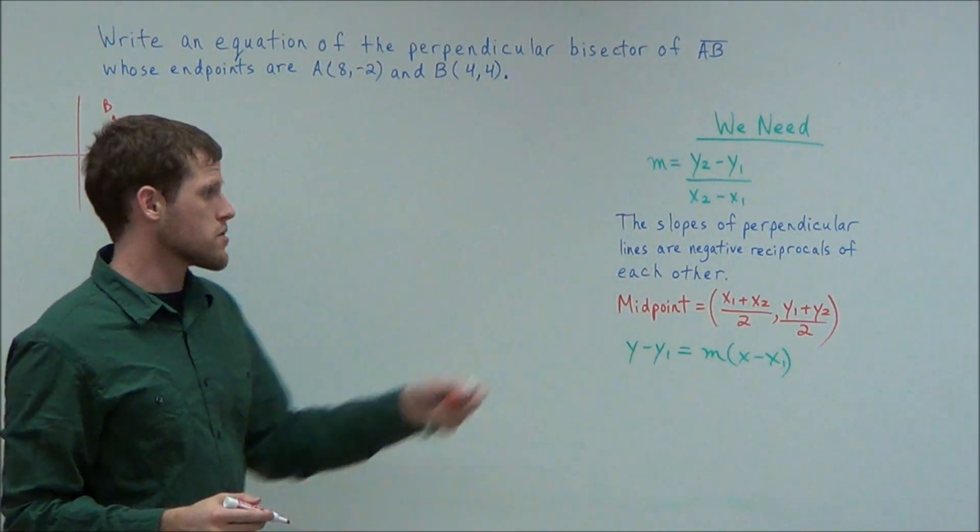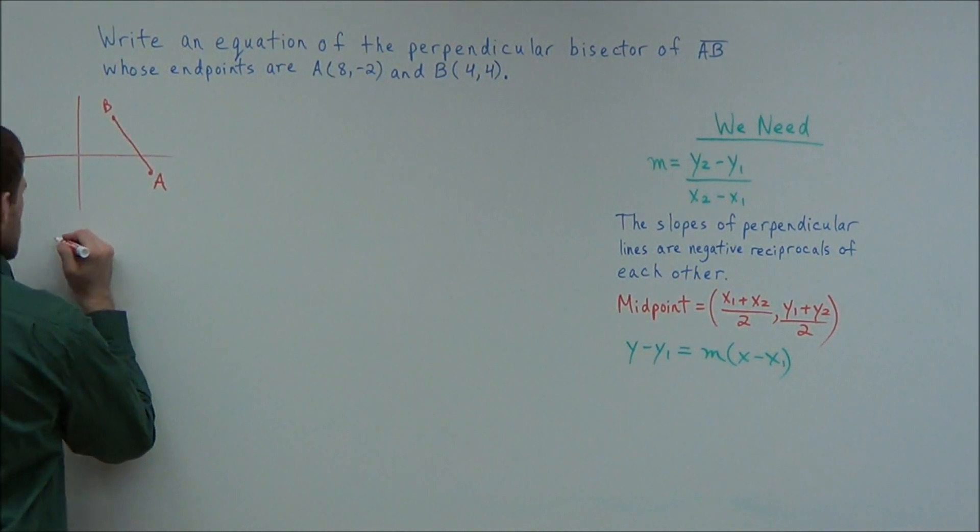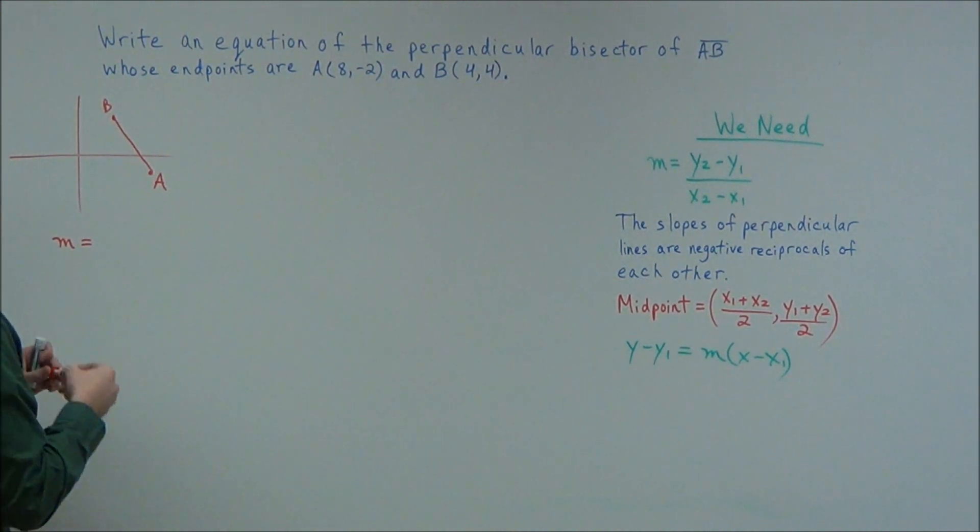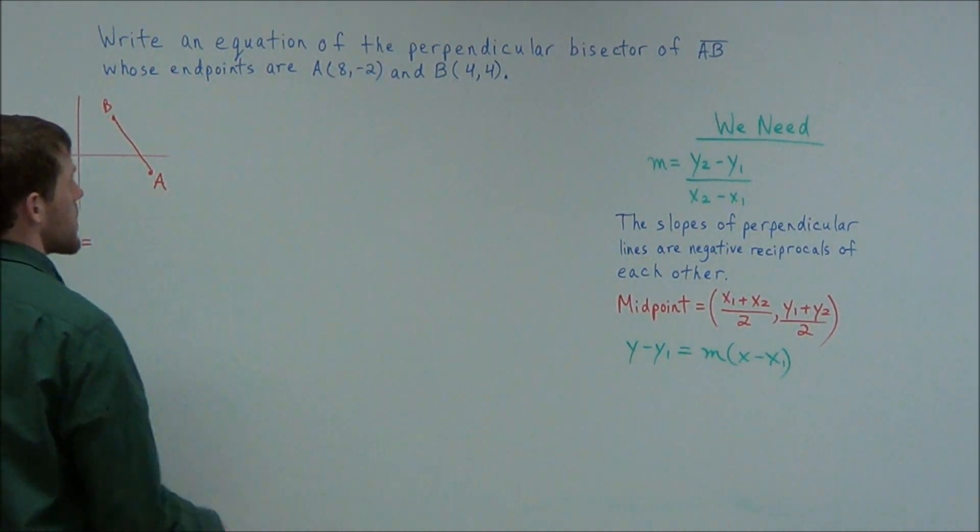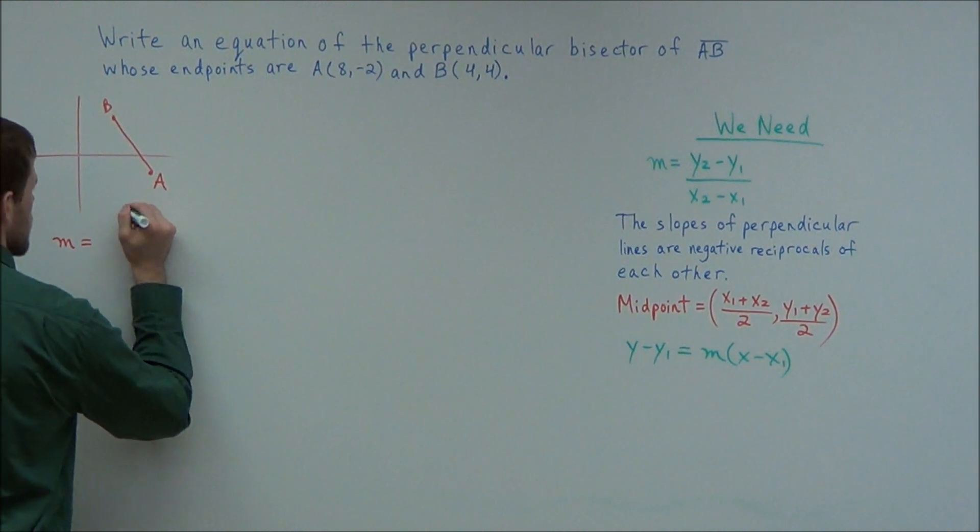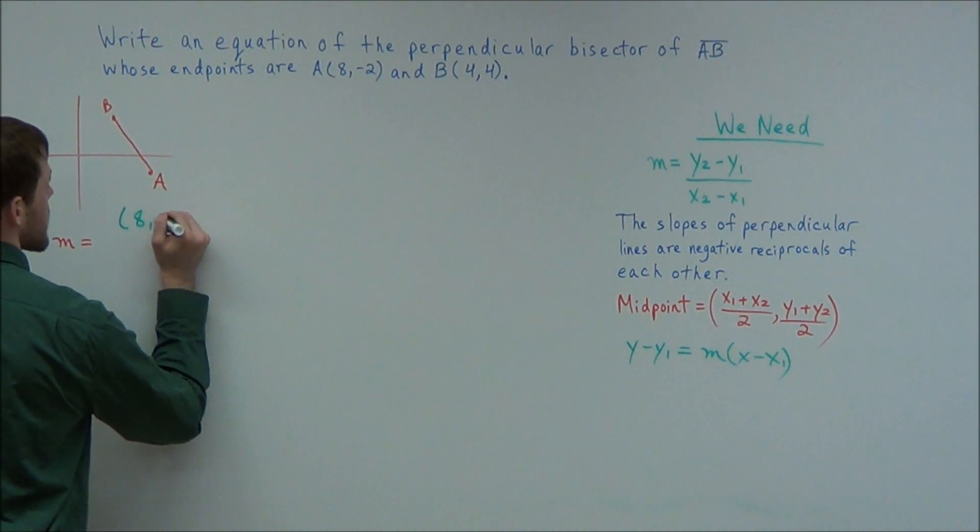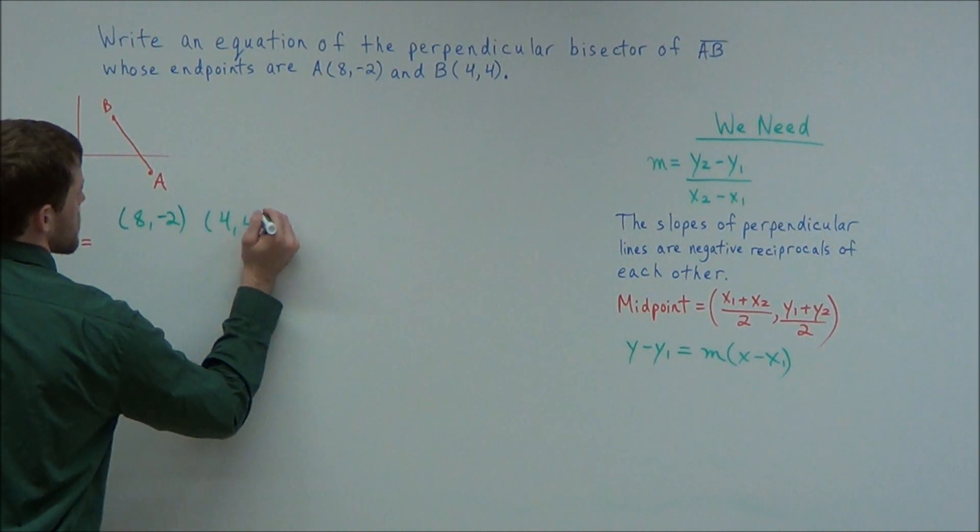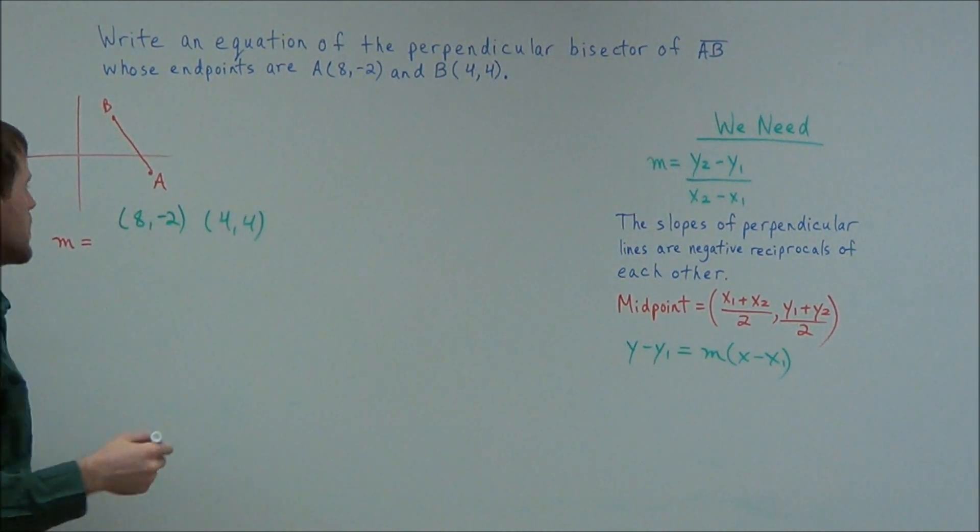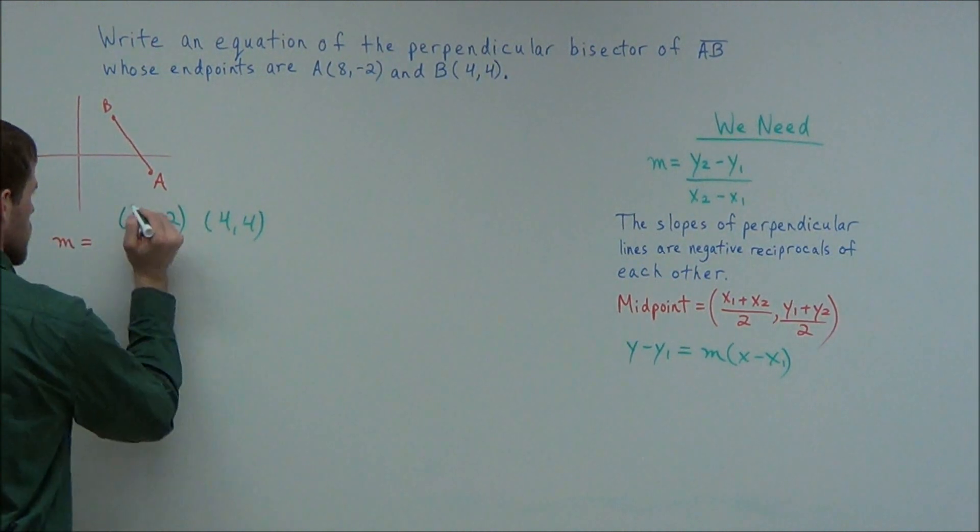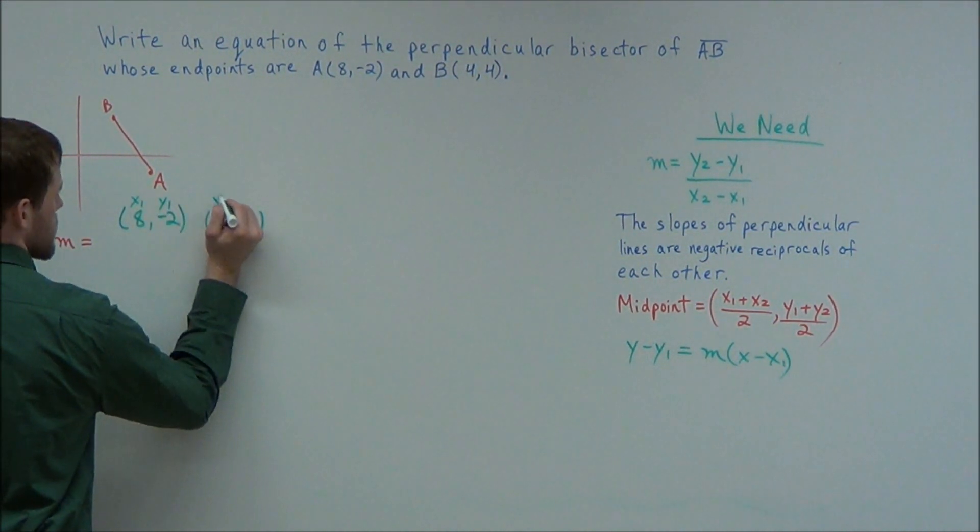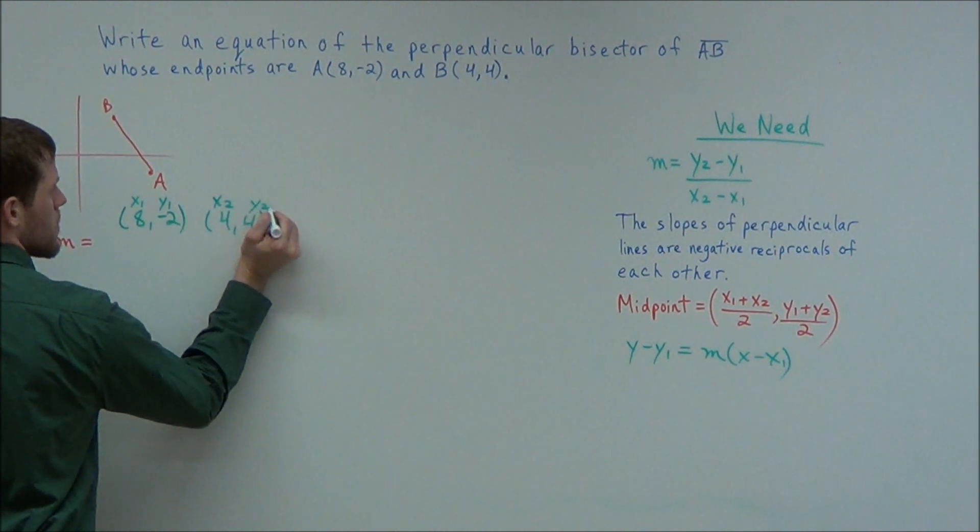And to do so we have our equation for slope. So we have m equals. And now our points, we're looking at the point 8, -2, and we have 4, 4. So these are the endpoints of this line segment. So if we label them accordingly, we can call this one x1, y1, and the second point x2, y2.